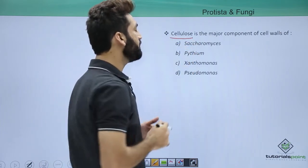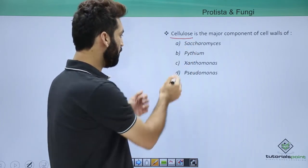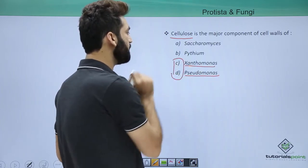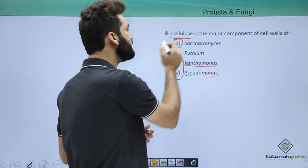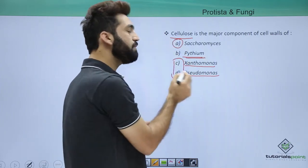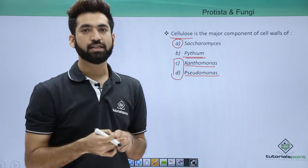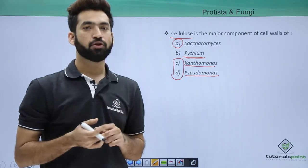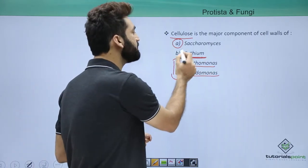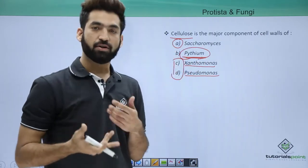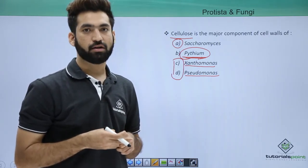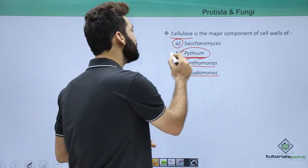Cellulose is the major component in the cell wall of which organism? Xanthomonas and Pseudomonas are bacteria, so they have peptidoglycan. Saccharomyces is a fungus, so it has chitin. Pythium is a member of oomycetes — most fungi have chitin in their cell wall, except oomycetes members. Pythium and Phytophthora are oomycetes members whose cell walls contain cellulose. So the answer is Pythium.